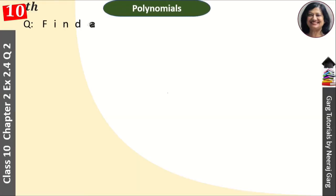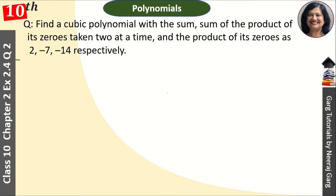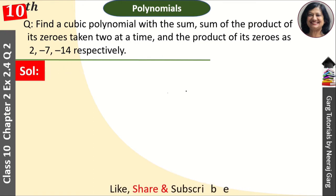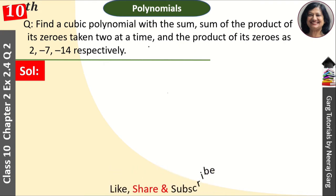Hi, this is Neeraj Garg and you are watching Class 10th Chapter 2 Polynomials, Exercise 2.4, Question Number 2: Find a cubic polynomial with the sum, sum of products of its zeros taken 2 at a time, and the product of its zeros as 2, minus 7, and minus 14 respectively.